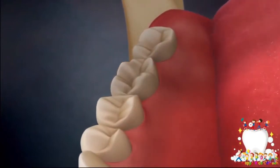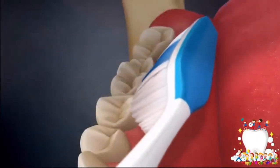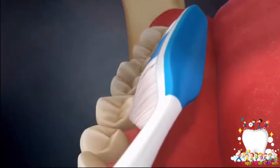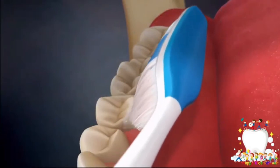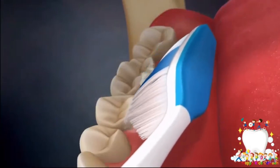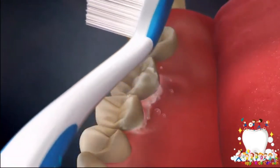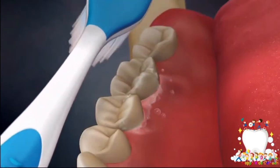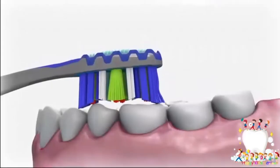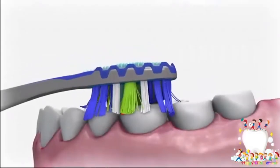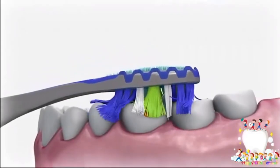The toothbrush is once again placed into the pocket at a 45 degree angle, completing small circles, then brushed from the gum line to the biting surface of the tooth.